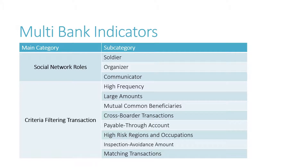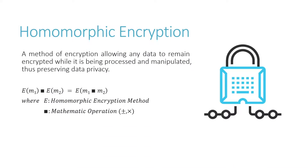Before we introduce our protocol, there are two important techniques. The first is homomorphic encryption. Homomorphic encryption is a form of encryption allowing one to perform calculations on encrypted data without decrypting it first. For example, if E is some homomorphic encryption method, mathematical operations on encrypted M1 and encrypted M2 will be the same as doing mathematical operations on M1 and M2 first and later encrypting the results.